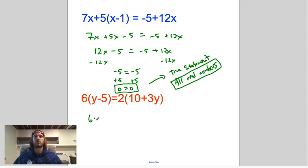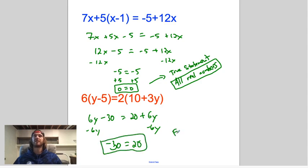Similar situation over here, except what you end up with is 6y minus 30 equals 20 plus 6y. Let's get those y's together. Subtract 6y, subtract 6y, and you get negative 30 equals 20. Gross. This is a false statement.